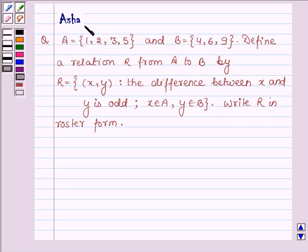Hi and welcome to the session. I am Asha and I am going to help you with the following question which says: If A is a set having elements 1, 2, 3 and 5, and B is a set having elements 4, 6 and 9...